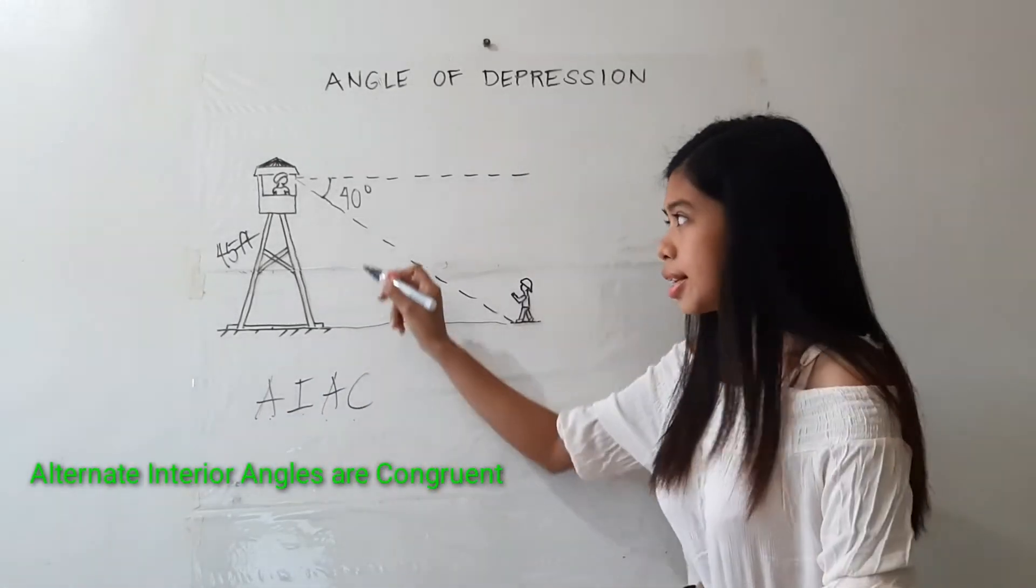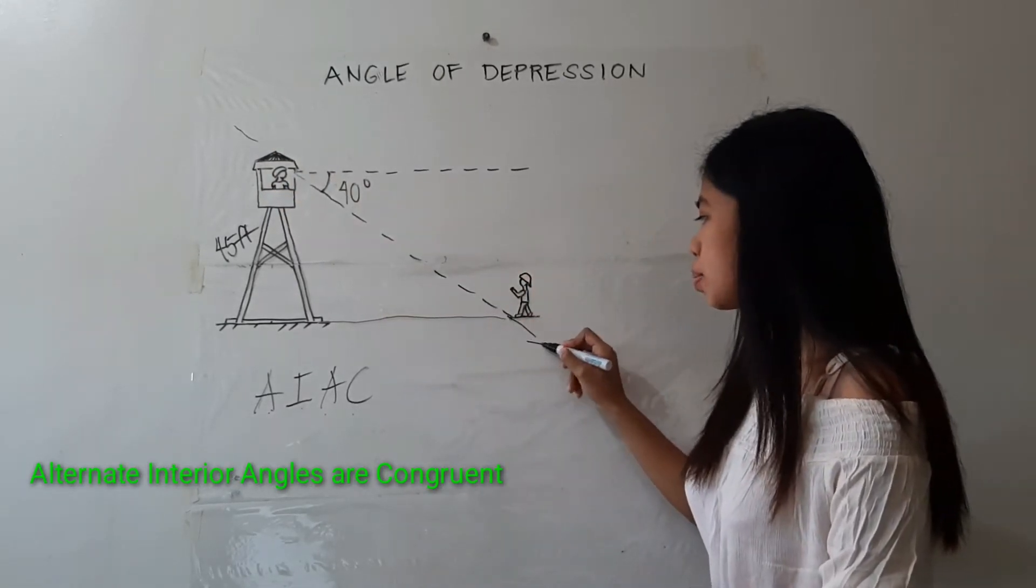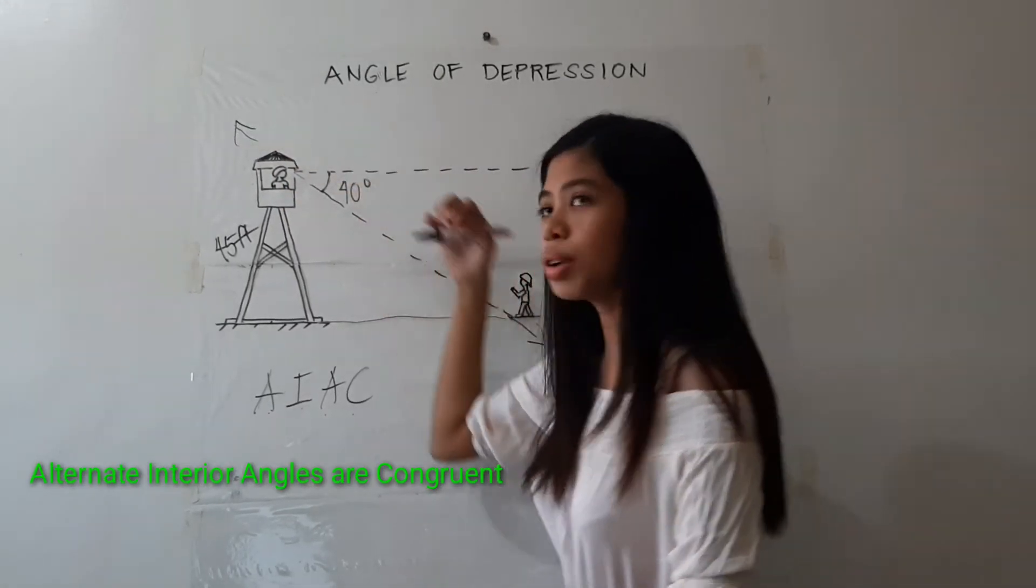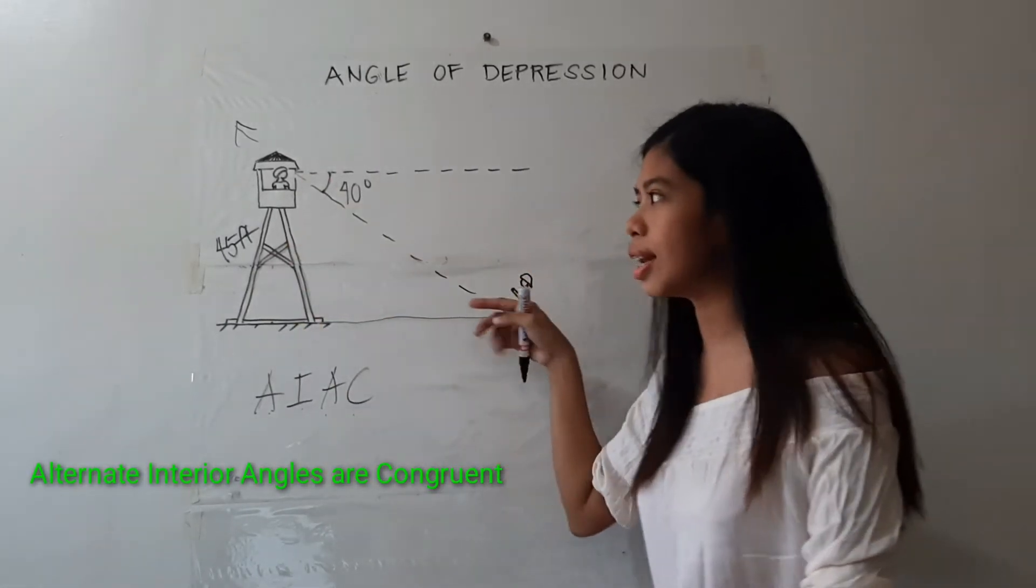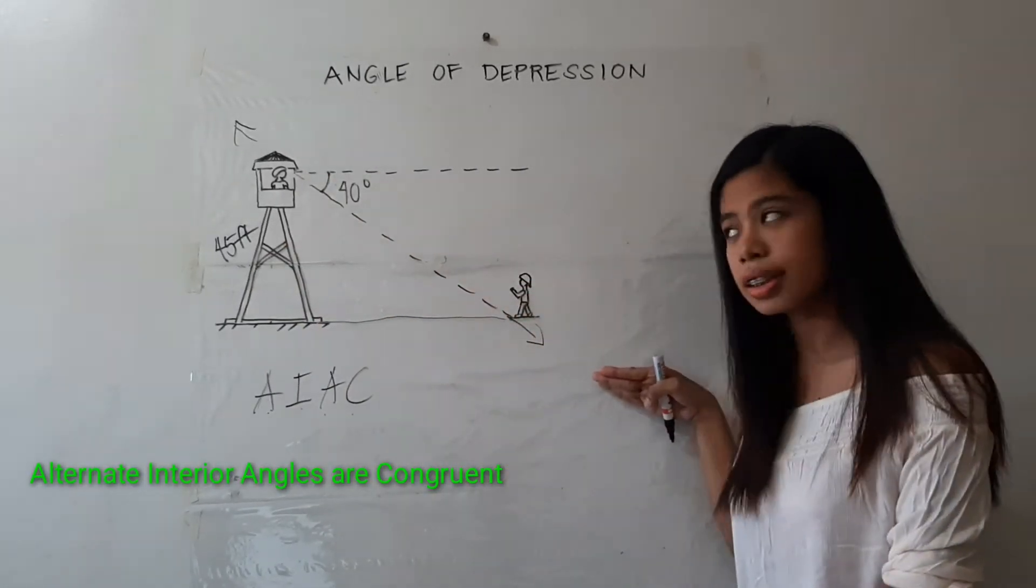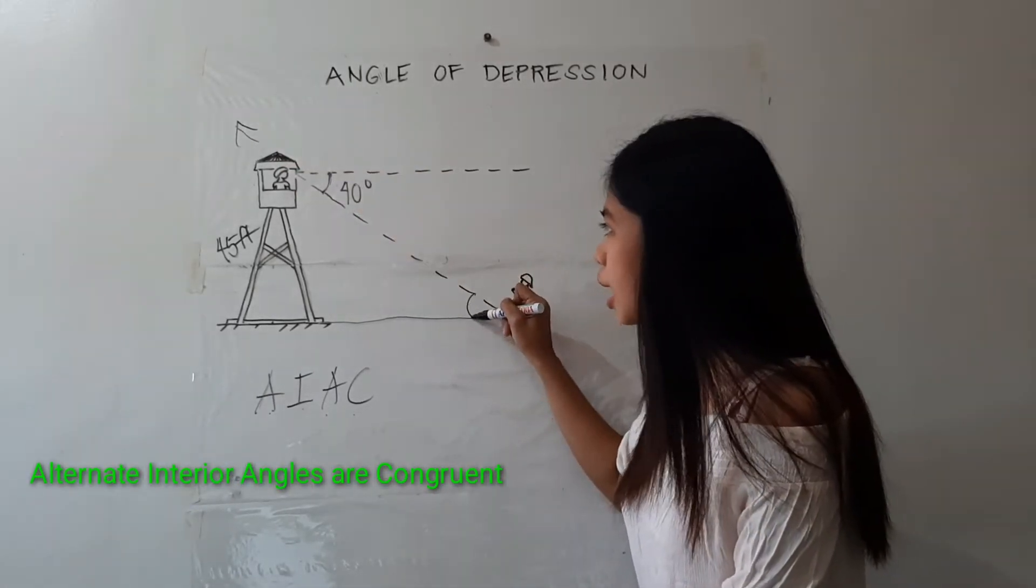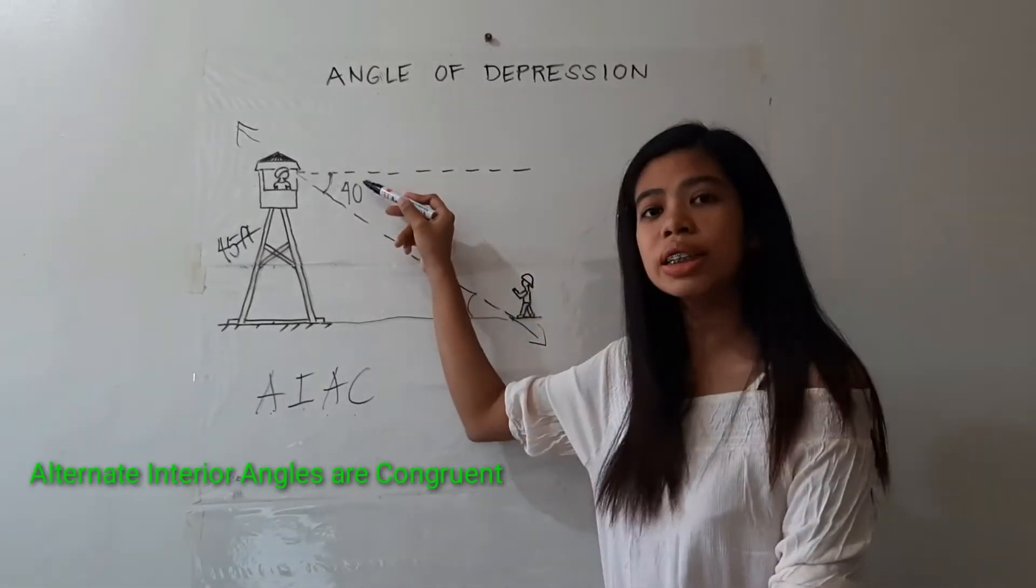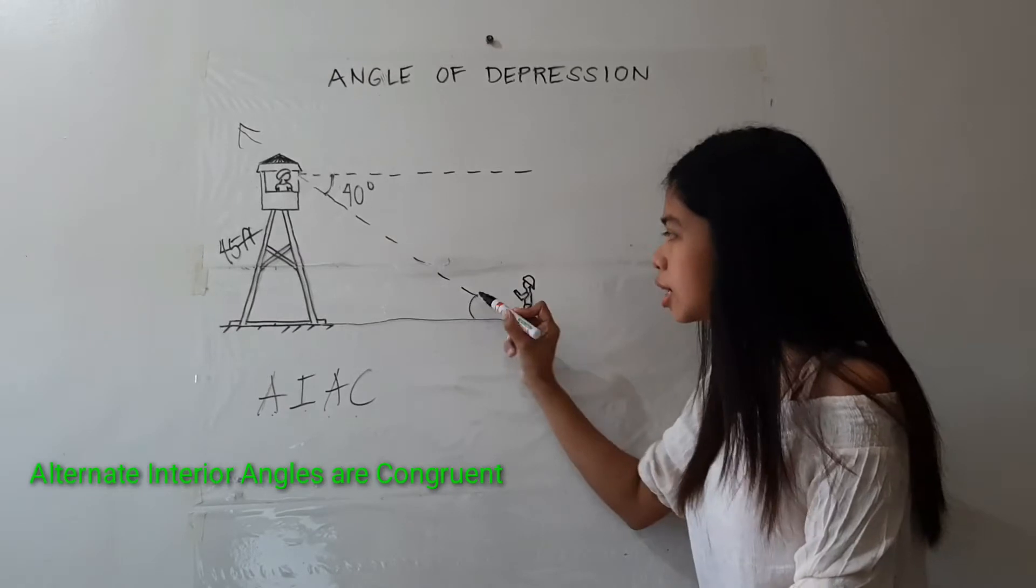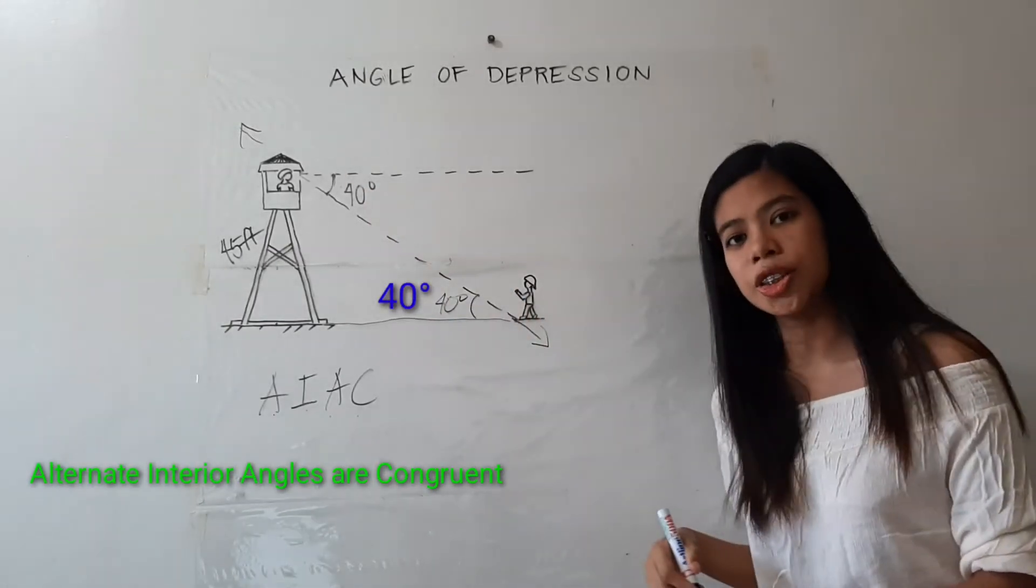Now, if these are the two horizontal lines and this is the transversal line, meaning these alternate interior angles are congruent. Meaning, if the angle of depression here is 40 degrees, the measure of this angle is also 40 degrees because they are alternate interior angles.